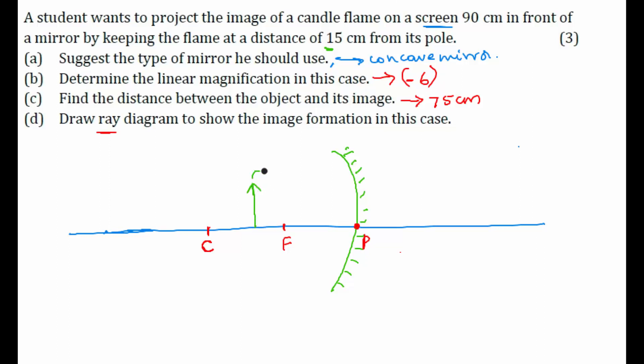And the distance between focus and pole is how much? 15 cm. So, if we trace the image for this object how will it come? A ray which is incident at pole. After reflection how will it go? It will go in such a way that this angle will be equal to this angle. This is our first ray.